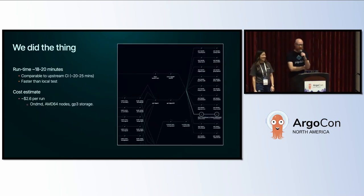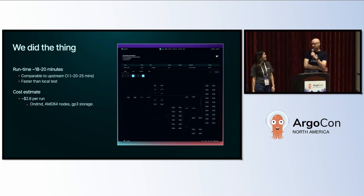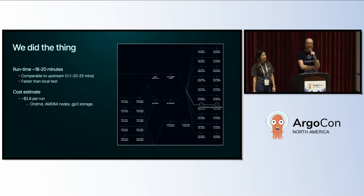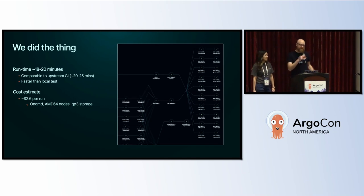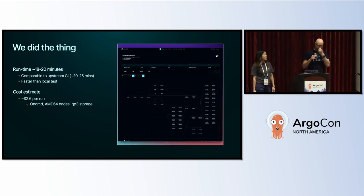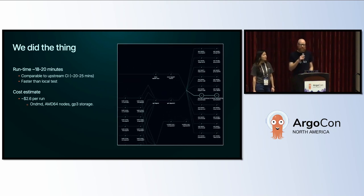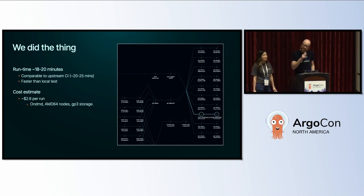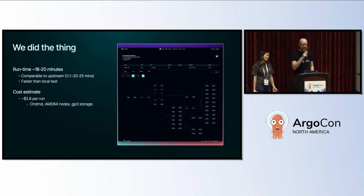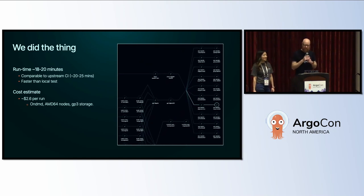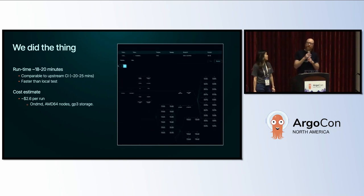With vCluster in the mix, we achieved what we set out to do. We added a workflow step that spun up the 10 vClusters. We connected to them within a minute, installed the dependencies and everything we wanted to test, and then the tests ran. Once the tests were complete, we had a workflow exit handler to tear down the vClusters. In terms of runtime, we're comparable with upstream CI — slightly quicker, if you're feeling generous — and definitely faster than running locally. In terms of cost, it works out at about $2.50 per run on AWS on-demand AMD64 nodes with GP3 storage. We're pretty confident we could halve that with a bit more effort.